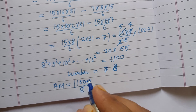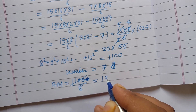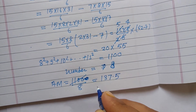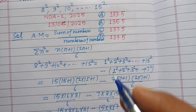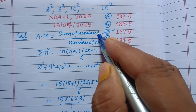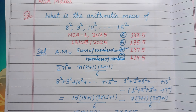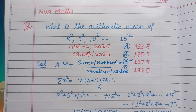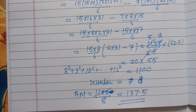Therefore, the arithmetic mean AM equals 1100 divided by 8, which gives 137.5. So 137.5 is the answer, found in option C. Option C is correct. I hope you got it — please like the video, subscribe to the channel, thanks for watching.